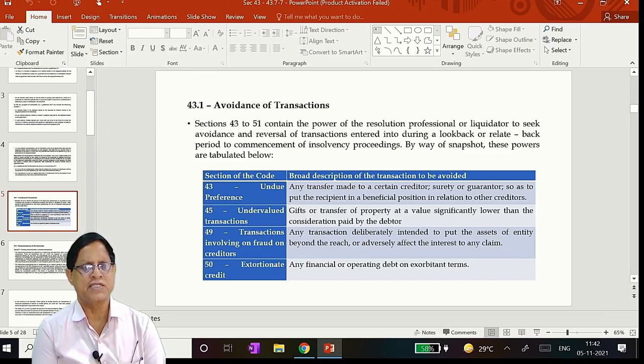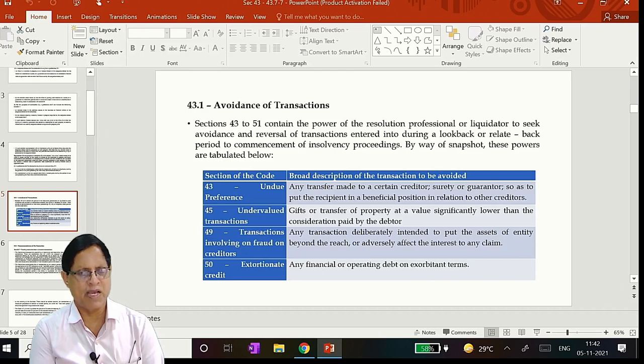That is, a financial creditor has lent 1 crore rupees above and he asked for the money back and the corporate debtor is not able to pay. Then he can initiate the CIR process by filing case before the jurisdictional adjudicating authority, NCLT, National Company Law Tribunal.